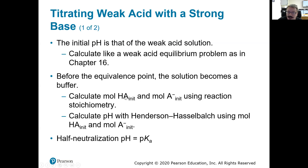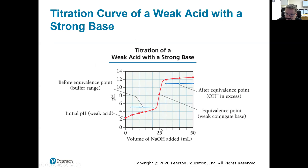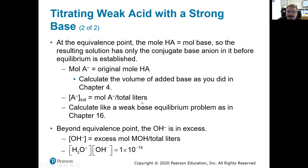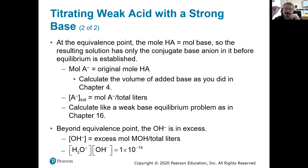Before the equivalence point, we have weak acid and its conjugate base — a buffer. The half-neutralization point is halfway to the equivalence volume: if the equivalence volume is 25 mL, the half point is 12.5 mL. At the half-neutralization point, pH equals the pKa of the weak acid. At the equivalence point, all the weak acid is consumed and only conjugate base remains — we use its Kb and an ICE table to find pH. Beyond that, with strong base and weak conjugate base together, the strong base is the overwhelming factor for determining pH from OH⁻ concentration.